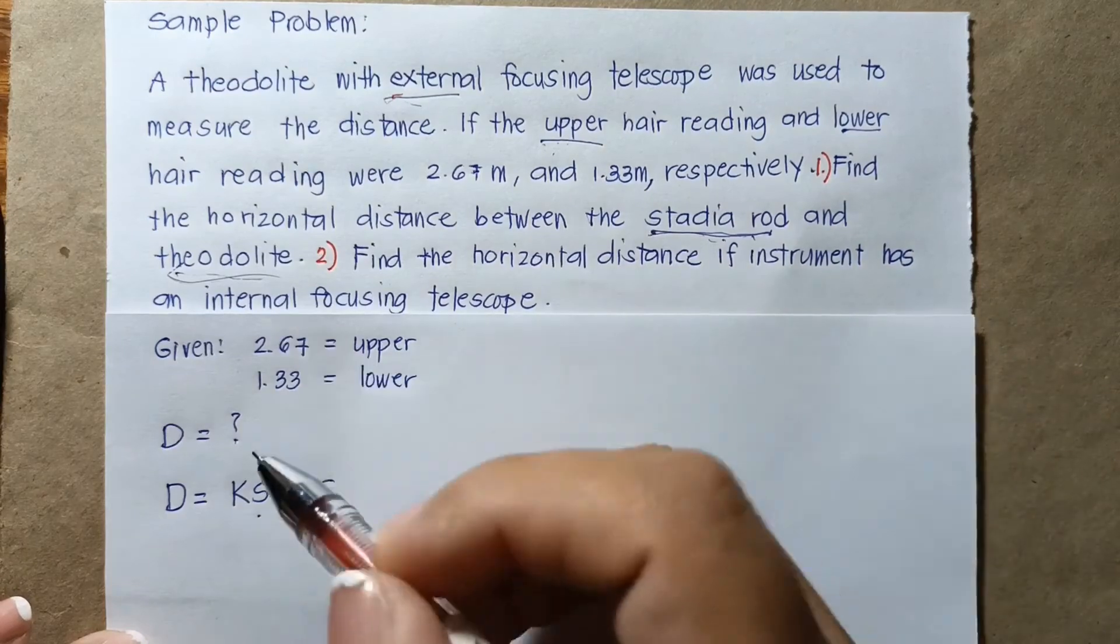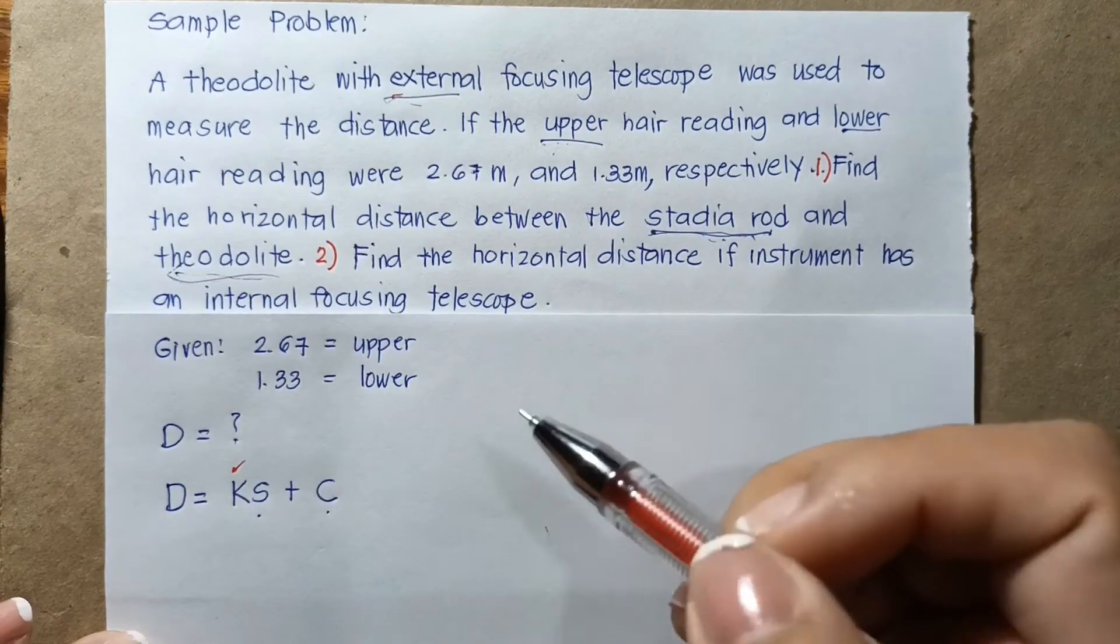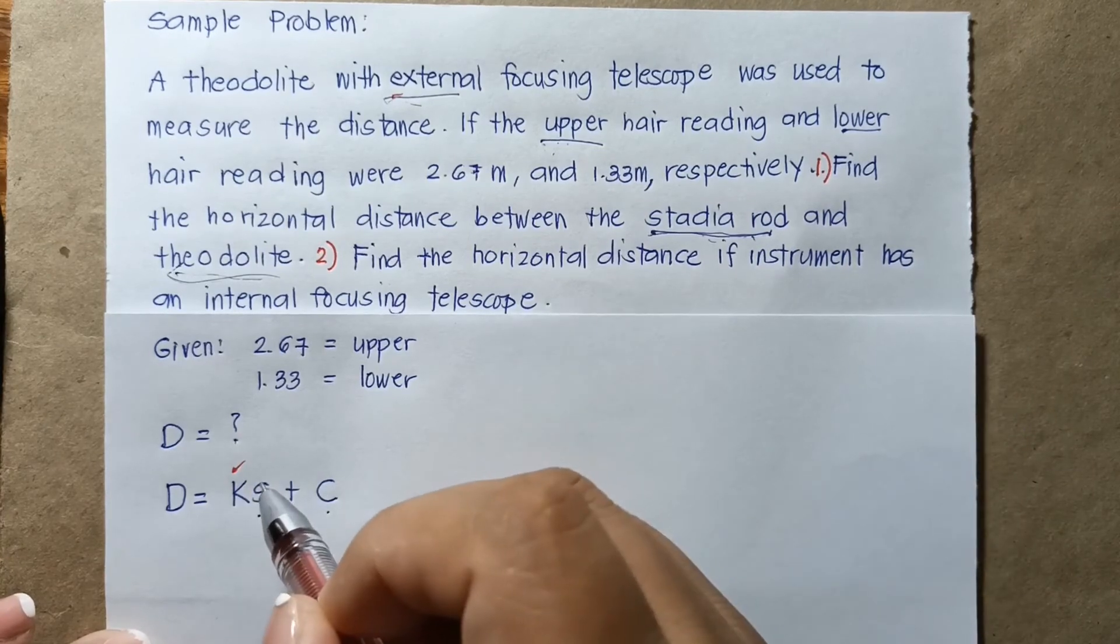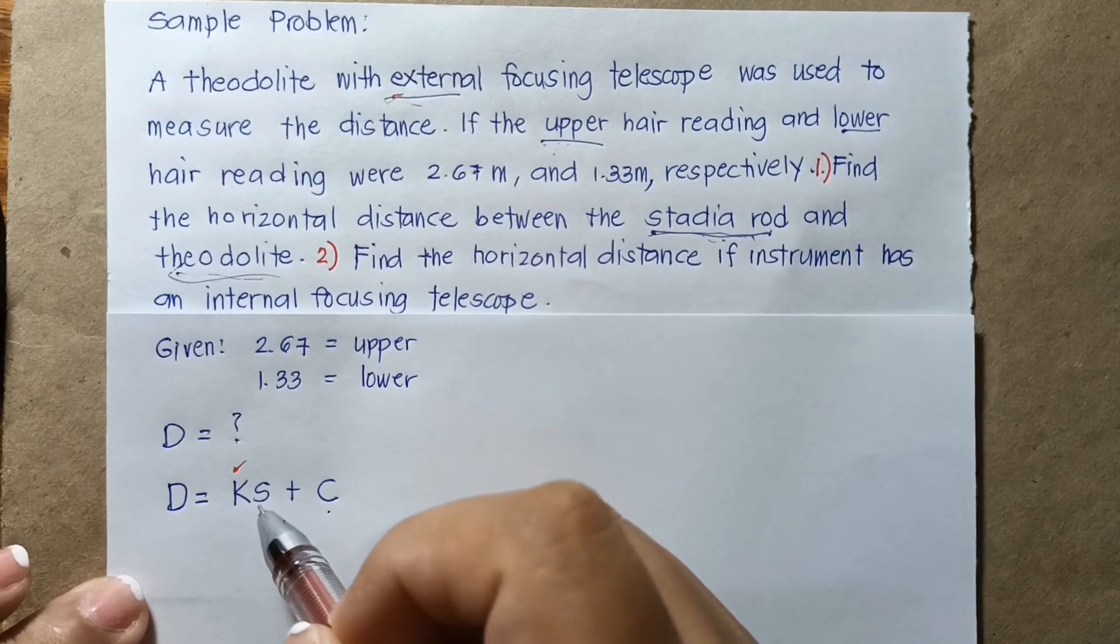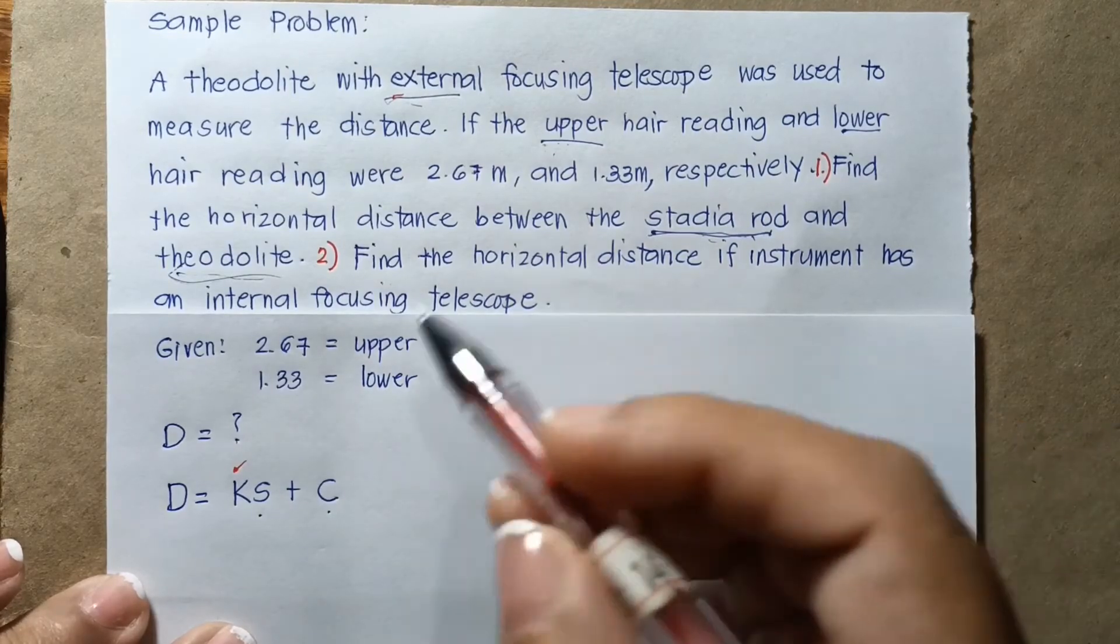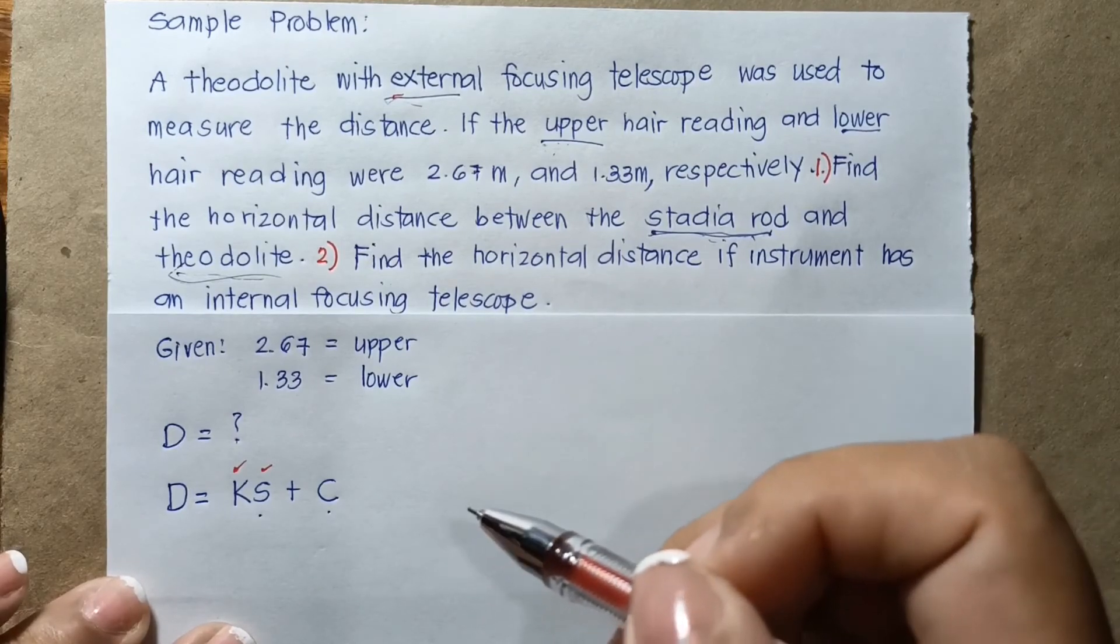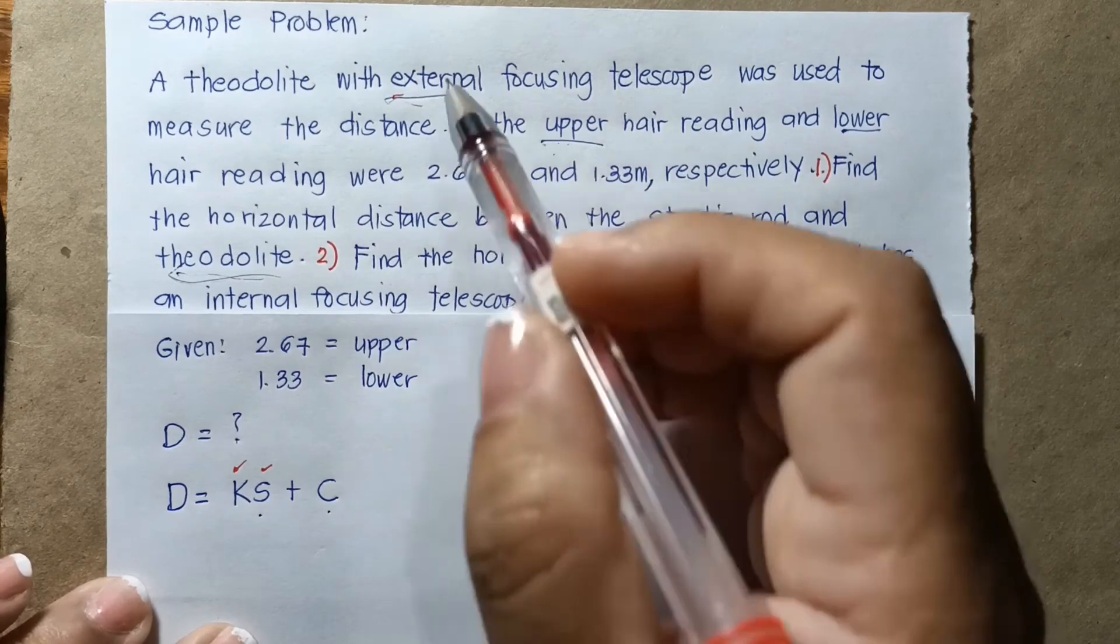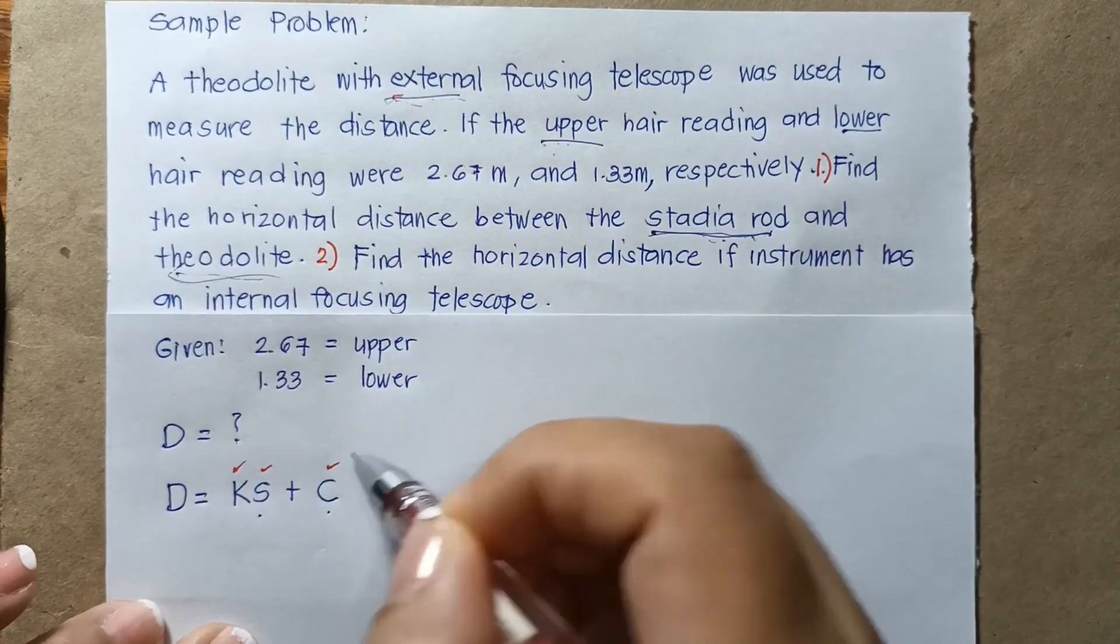So examining again, K is not given. However, if it's not given, we know that K is assumed to be 100. S is not given, however, we can get S or the stadia rod intercept by using the two hair readings. And C is the stadia rod constant, which is equal to 0.3 meters if it is external focusing telescope. So we have that value also.